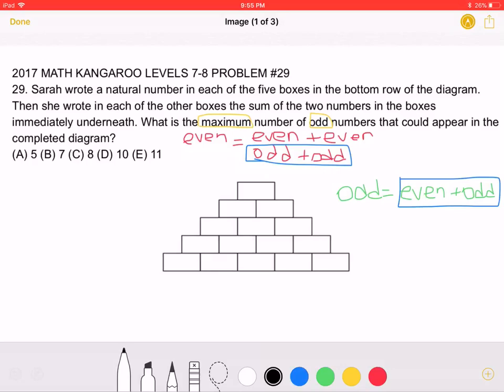What is the maximum number of odd numbers that could appear in the completed diagram? A, 5, B, 7, C, 8, D, 10, or E, 11.